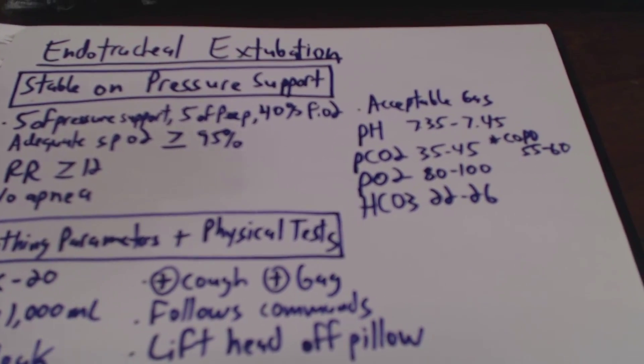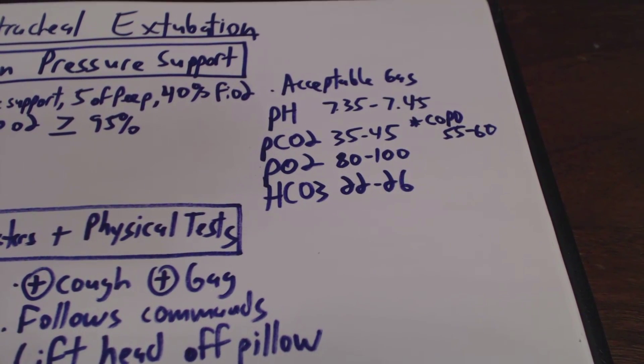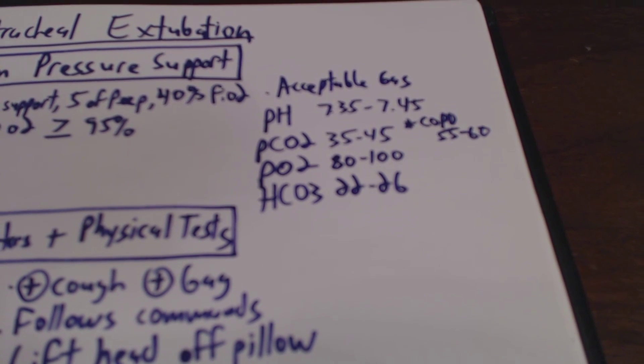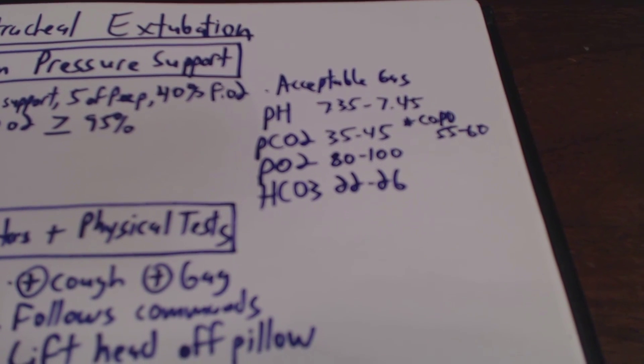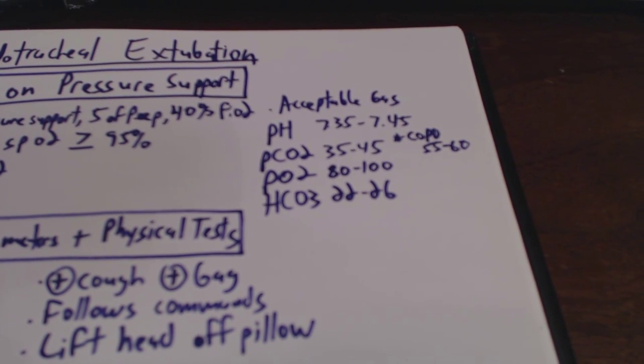After that, we want to make sure the patient has an acceptable blood gas. For an acceptable blood gas, we want a pH of 7.35 to 7.45, a pCO2 of 35 to 45, pO2 of 80 to 100, and a bicarb of 22 to 26.